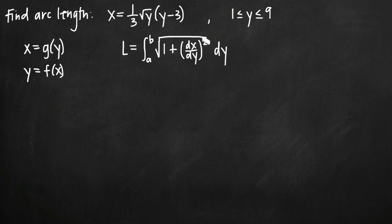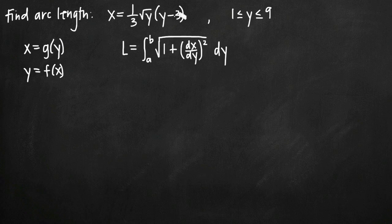The first thing we need to do is take our function x equals one-third times the square root of y times y minus 3 and find its derivative — the derivative of x with respect to y — so that we can plug it in for dx/dy. Before we do, let's go ahead and simplify our function by expanding it so that the derivative is easier to take.